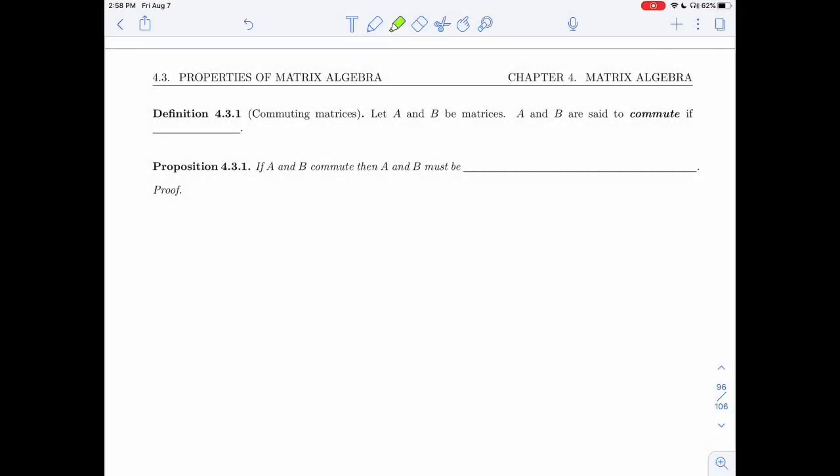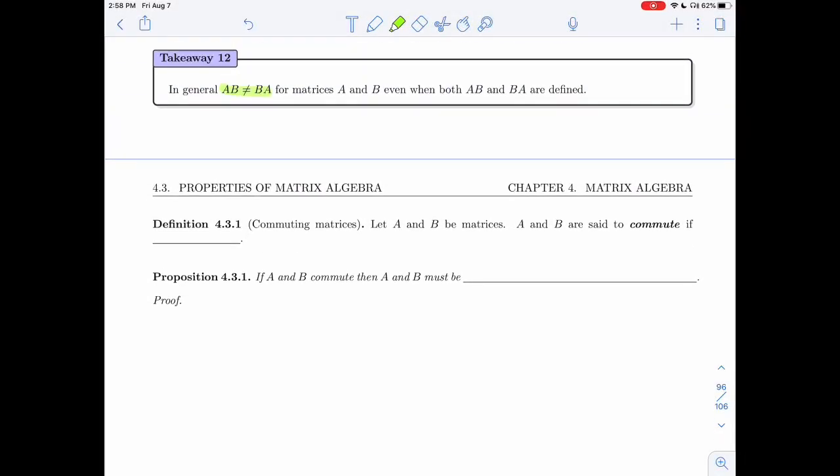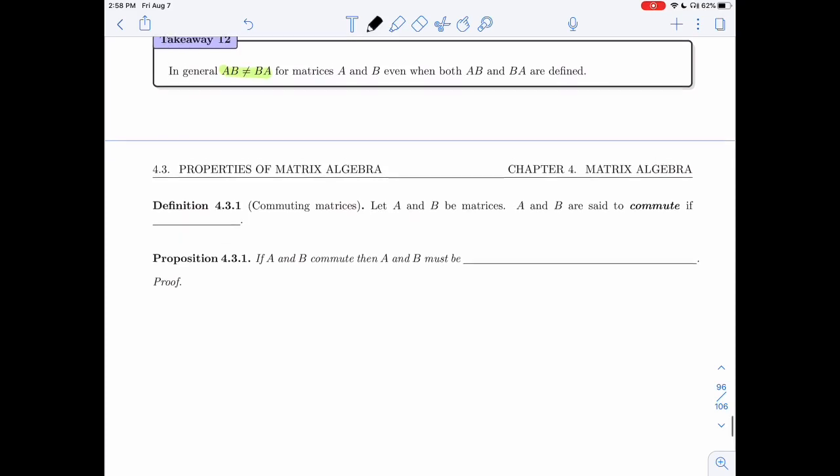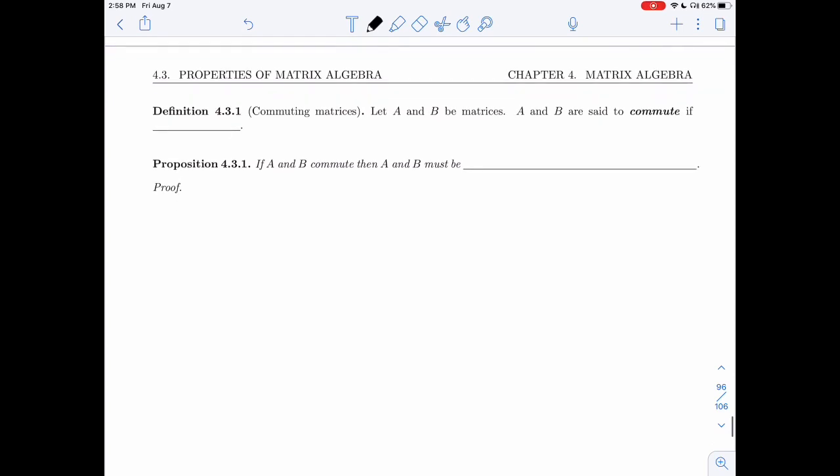In the last video, we saw that in general, AB is not BA, and so that means that in general, matrix multiplication is not commutative. For some specific matrices A and B, it happens that AB is equal to BA. In that case, we'll say that matrices commute, so matrices will commute if AB equals BA.